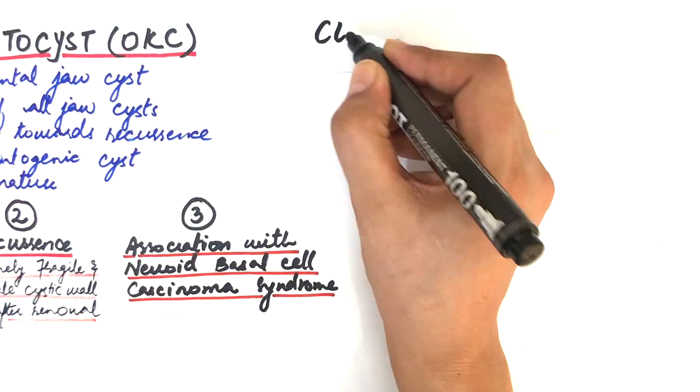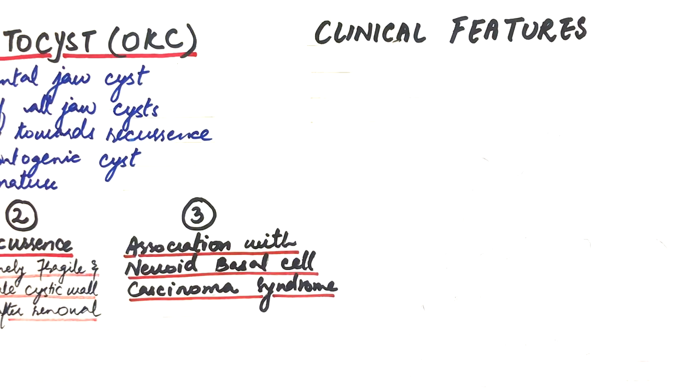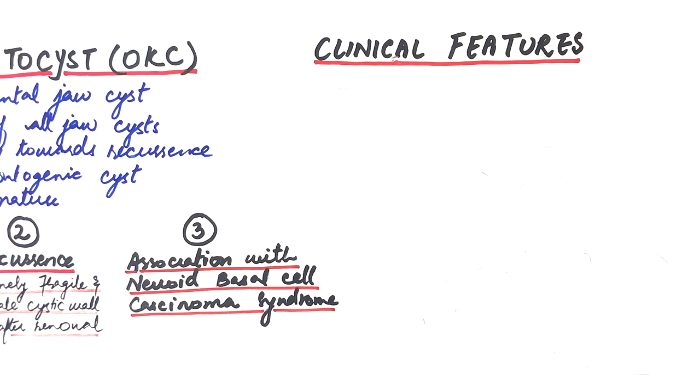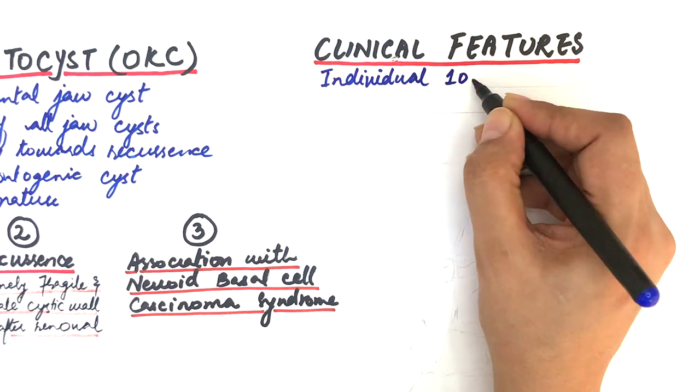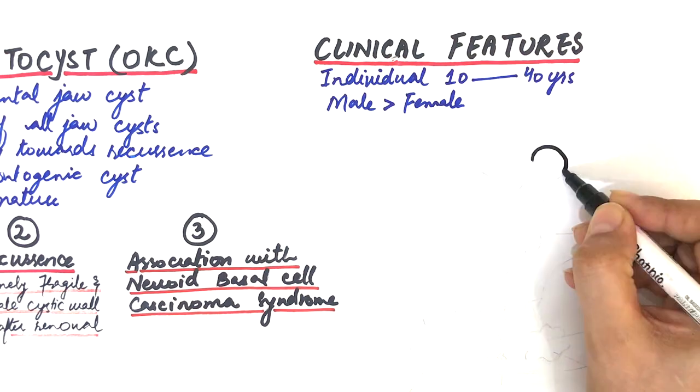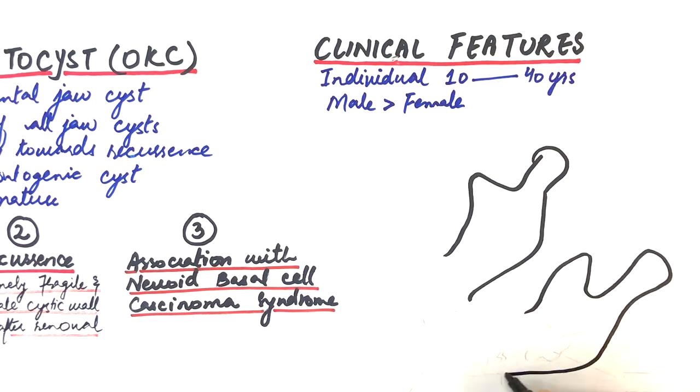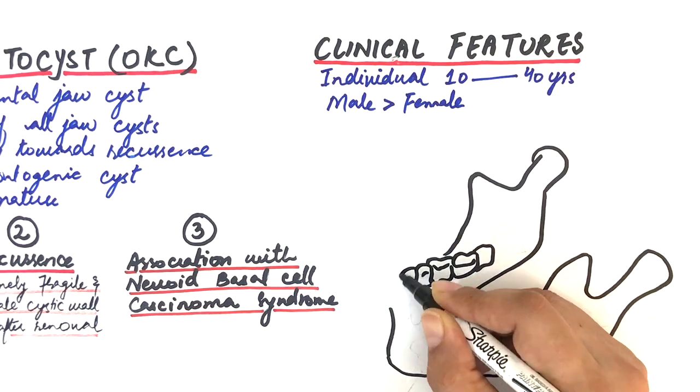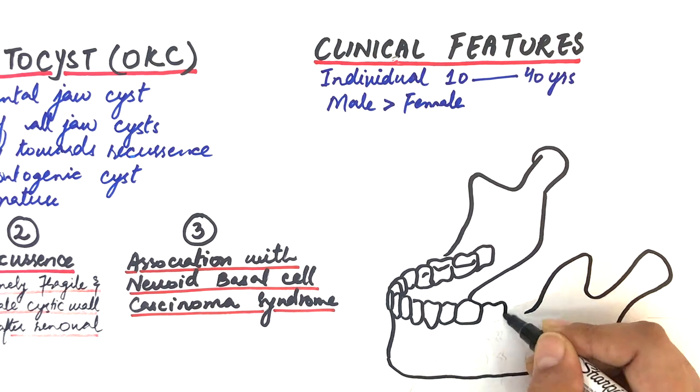Let's talk about some clinical features of the cyst. The cyst mostly affects individuals in the age range between 10 to 40 years with a slight male predilection. In about 60 to 80% of cases, the jaw most commonly involved is the mandibular jaw.